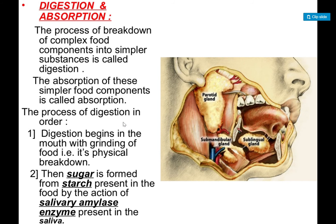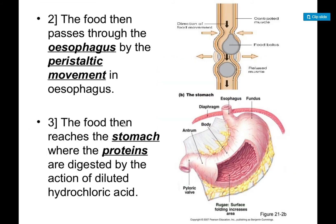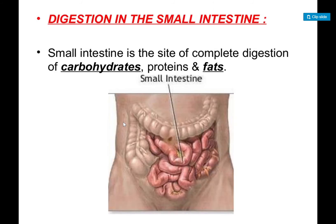Looking at the process of digestion: first, digestion begins in the mouth, where carbohydrates and starch begin to be digested. After that, food travels through the esophagus and then goes to the stomach. In the stomach, food is mixed with HCl and some enzymes which digest proteins. After that, food comes to the small intestine, where carbohydrates, proteins, and fats are completely digested.